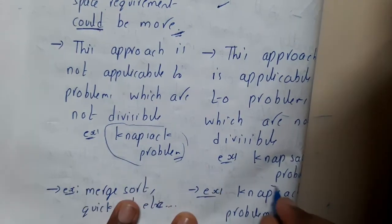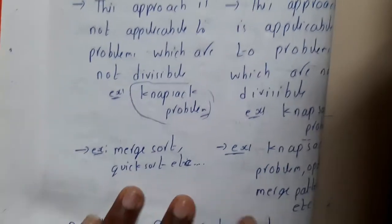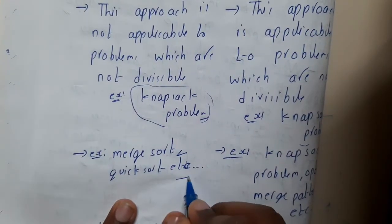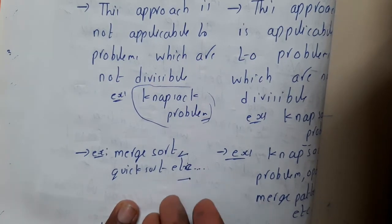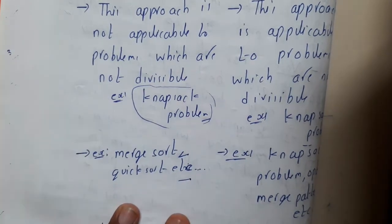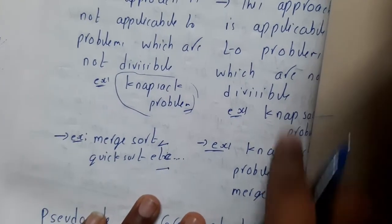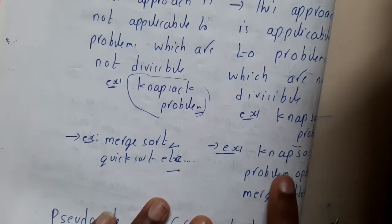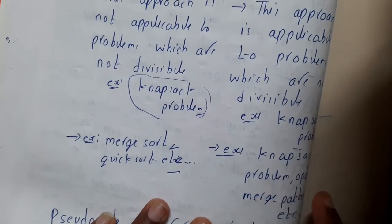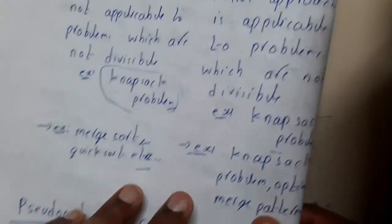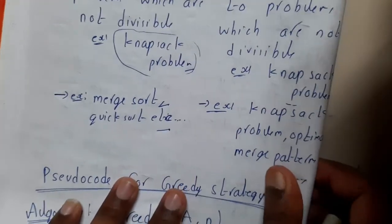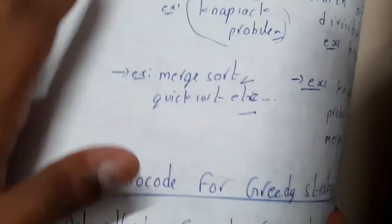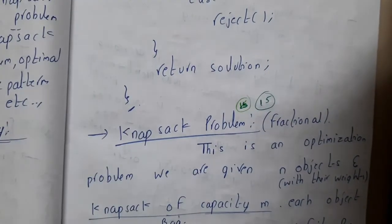Greedy approach is applicable to problems which are not solvable using divide and conquer, like the knapsack problem. Examples of divide and conquer include merge sort, quick sort, matrix multiplication, and Strassen's theorem. For greedy approach, examples include the knapsack problem, merge patterns, optimal file copy patterns, and shortest path problems.